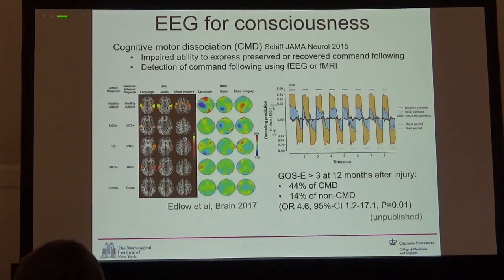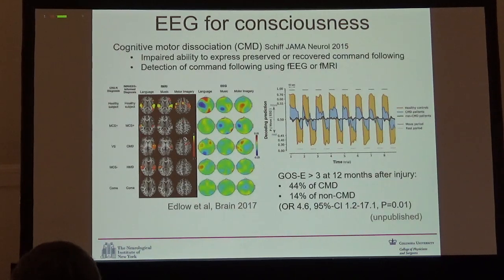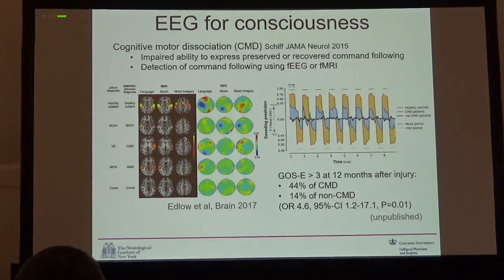So Brian Edlow's group in Boston also looked at EEG. They were able to detect signatures of cognitive motor dissociation — the state where cognition is better than motor response. In a larger study we found that about 15% of patients in the critical care setting had this cognitive motor dissociation and could reliably distinguish between the commands 'open your right hand' and 'close your right hand,' showing a detectable EEG response to that very small change in command.